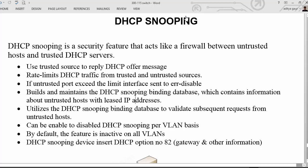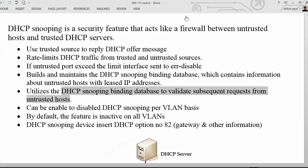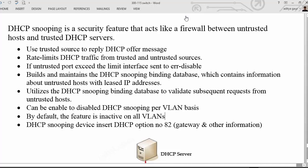In your DSCP snooping device — in this case the switch — it is going to maintain a DSCP snooping binding database, where the IP address and MAC address of the device along with the lease information is maintained by the DSCP snooping device. This can later be used for some other purpose like dynamic ARP inspection. It also utilizes the DSCP snooping binding database to validate subsequent requests from the untrusted host, like how many times it created a DSCP discover message. DSCP snooping can be enabled or disabled on a per-VLAN basis — for VLAN 1 you can enable it, for VLAN 2 you can disable it. By default the feature is inactive, or in other words disabled.